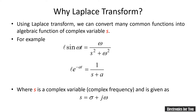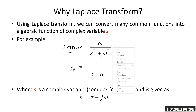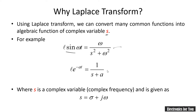The answer is that the Laplace transform converts common functions into algebraic functions of a complex variable. For example, the Laplace transform of sin(ωt) is ω divided by (s² + ω²), meaning a sine function is converted into a mathematical algebraic function. Similarly, the Laplace transform of e^(−at) is 1/(s + a). So these complex functions are converted into simple algebraic functions in the complex frequency domain, where s = σ + jω, with σ as the real part and jω as the imaginary part.